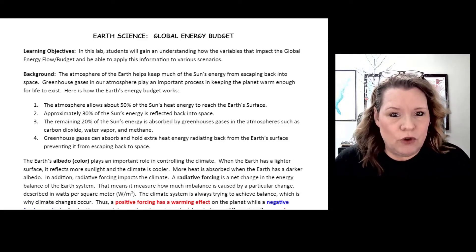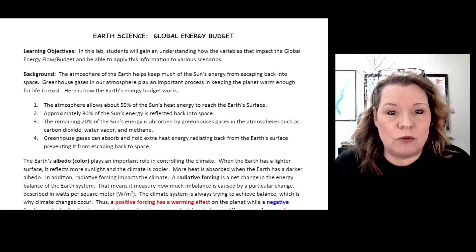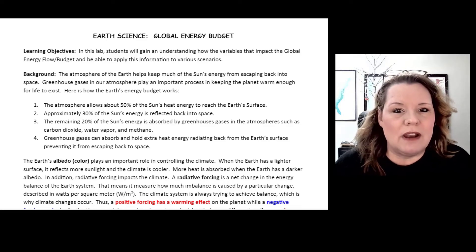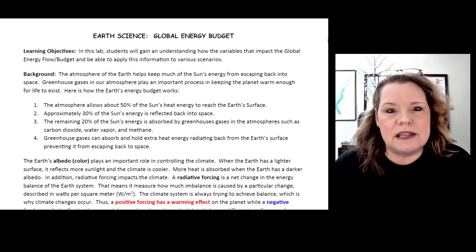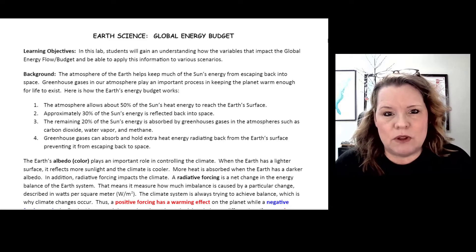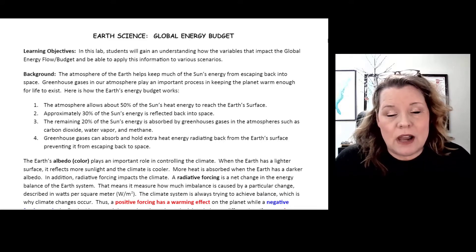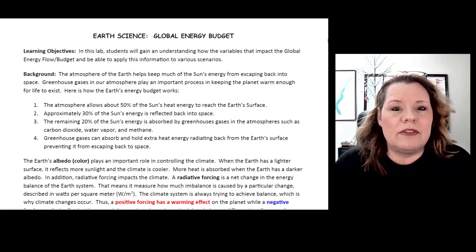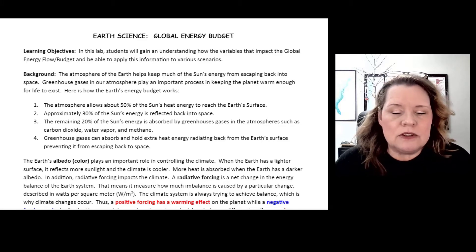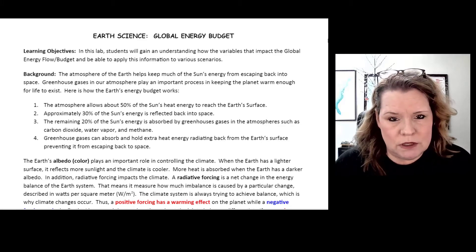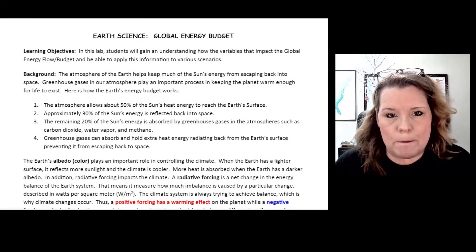If we have a whole bunch of greenhouse gases in the atmosphere, more heat will be held. If we have less, then more can escape back out into space once we've had some absorbed by the land and ocean and then some reflected back. So that brings me to a set of terms called albedo.